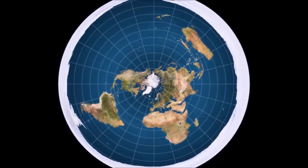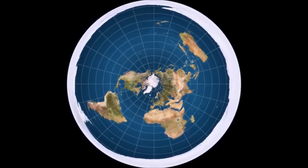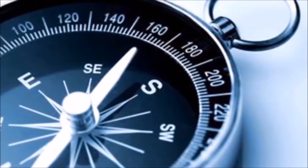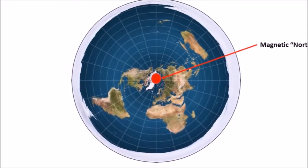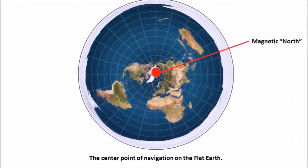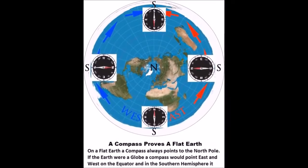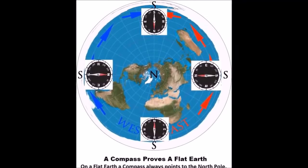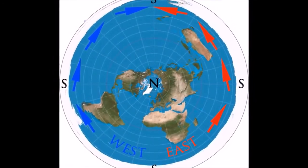On the flat Earth, North would be at the center and South would be anywhere extending away from North. A compass will always point North no matter where you are on Earth. The North Pole would be just as ancient cultures knew it — Magnetic North — because they believed that towards the center of the flat plane it acted like a magnet. This is why, wherever you are on our flat Earth, a compass will always point North. North and South seem to make more sense on the flat Earth than the ball Earth.